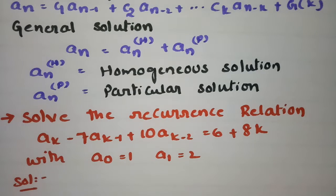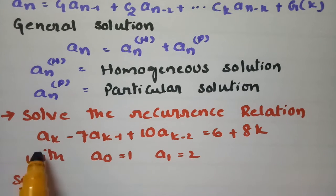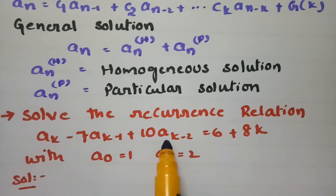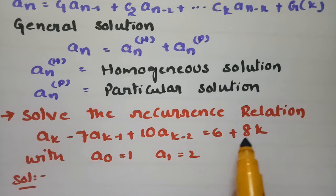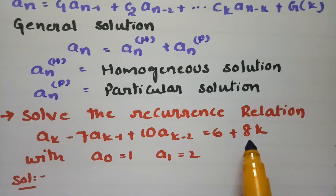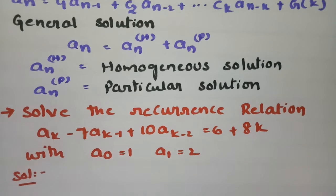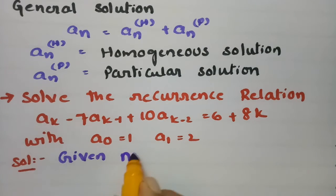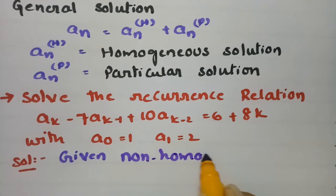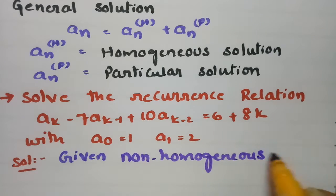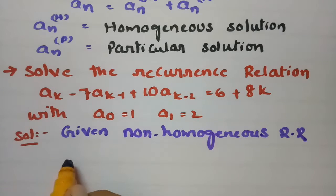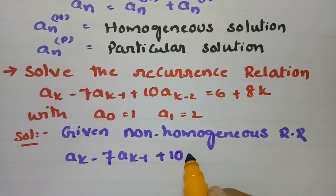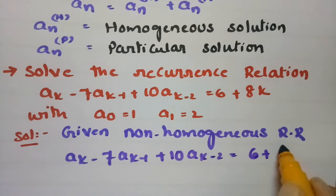Here is the problem. We have to solve the recurrence relation Ak - 7·Ak-1 + 10·Ak-2 = 6 + 8k. Since the RHS has a non-zero expression, this is a non-homogeneous recurrence relation.